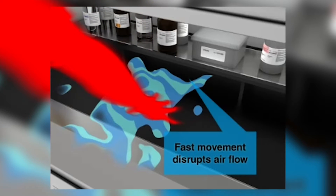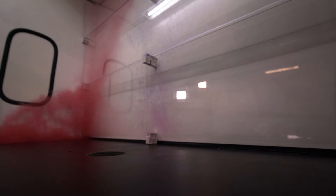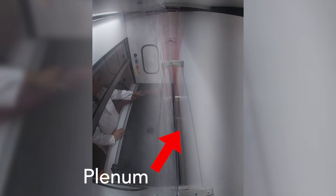Just like water running downhill, air flows from high pressure areas to low pressure areas. In a fume hood, the low pressure area is the plenum — the plenum is the space between the baffles in the back wall.